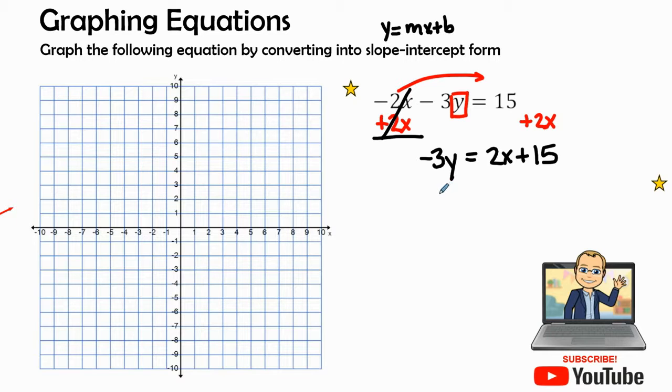Now the y is not completely isolated, it's down to one term, but it's not completely isolated. It's connected to that 3 by multiplication. And the inverse of multiplication is division. So we're going to divide each term on both sides by negative 3.